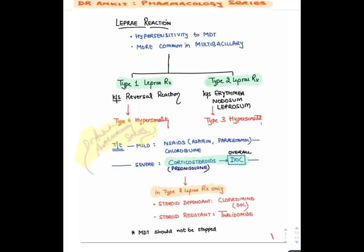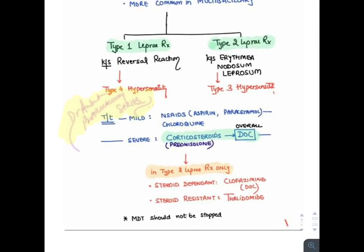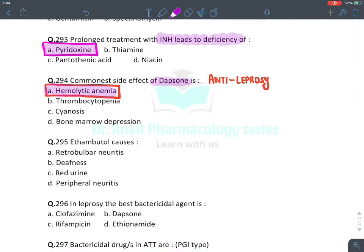Lepra reaction is an allergic reaction to MDT, more commonly seen with multibacillary leprosy. Type 1 (reversal reaction) is Type 4 hypersensitivity (cell-mediated/delayed). Type 2 (erythema nodosum leprosum/ENL) is a more dangerous condition. Drug of choice for all lepra reactions is corticosteroid. In steroid-dependent Type 2 cases, give clofazamine (has immunosuppressive property). In steroid-resistant Type 2 (ENL) cases, give thalidomide.